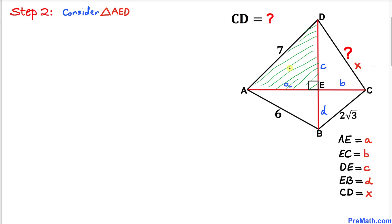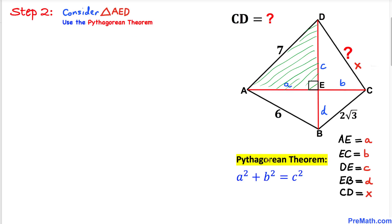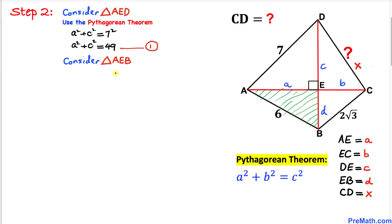Now let's consider triangle AED. We know this triangle is a right triangle, so we are going to use the Pythagorean theorem: a² + b² = c², where c is the longest leg. Here the longest leg is 7, so applying the theorem gives us a² + c² = 49. Let's call this equation number one.